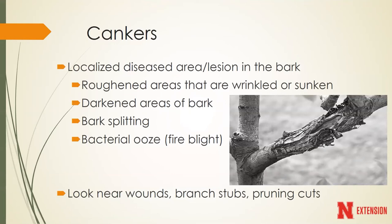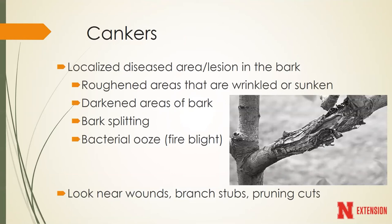Cankers - I get a lot of questions about what cankers are. One of the nice things about most cankers is it really doesn't matter what pathogen is causing it - whether it's anthracnose, Botryosphaeria, Phomopsis, or Nectria. Most canker control is going to be the same regardless of the specific pathogen. All a canker is, is a localized area of disease occurring in the bark. Typically we think about cankers occurring on the branches, but they can also occur on the main trunk. The worst case is when cankers occur lower down on the main trunk - there's not a whole lot we can do then.